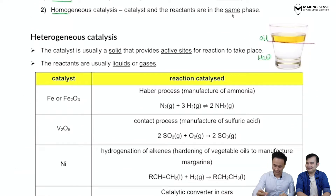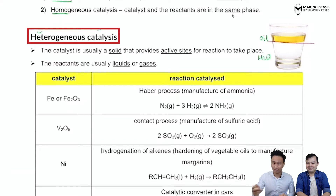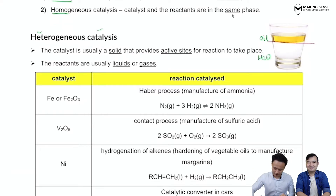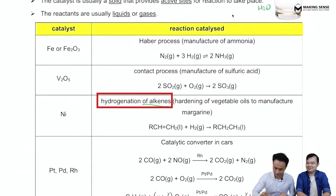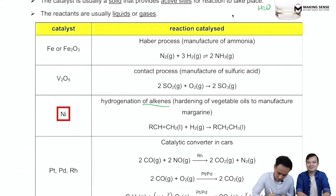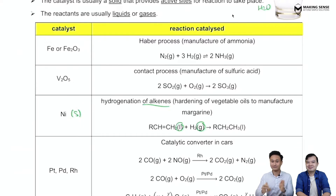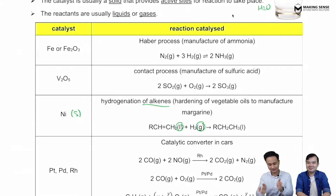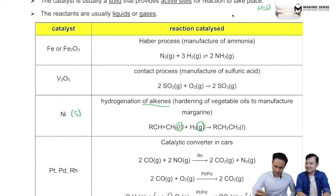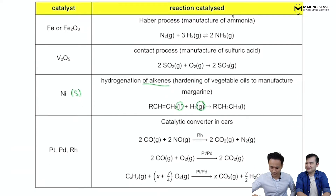The first type we'll discuss is the heterogeneous catalyst. A classic example is the hydrogenation of alkenes using a nickel catalyst. Notice that nickel is clearly in the solid state while the reagents are in liquid and gaseous states. Since the states are different, the phases are confirmed different — this is clearly a heterogeneous catalyst.